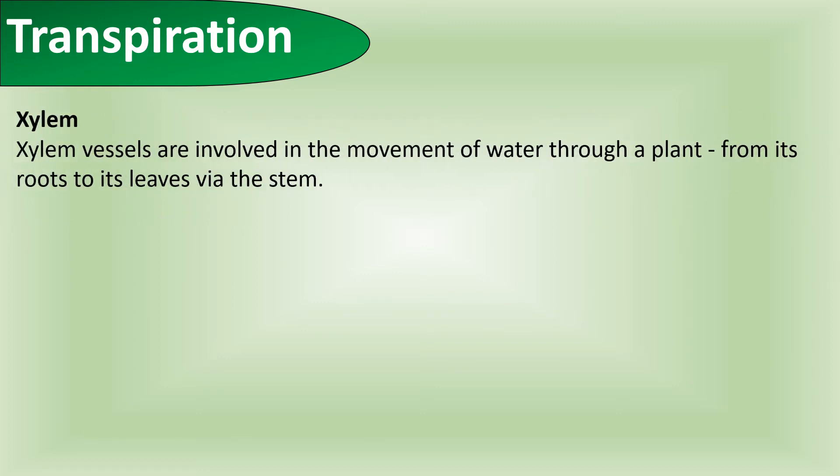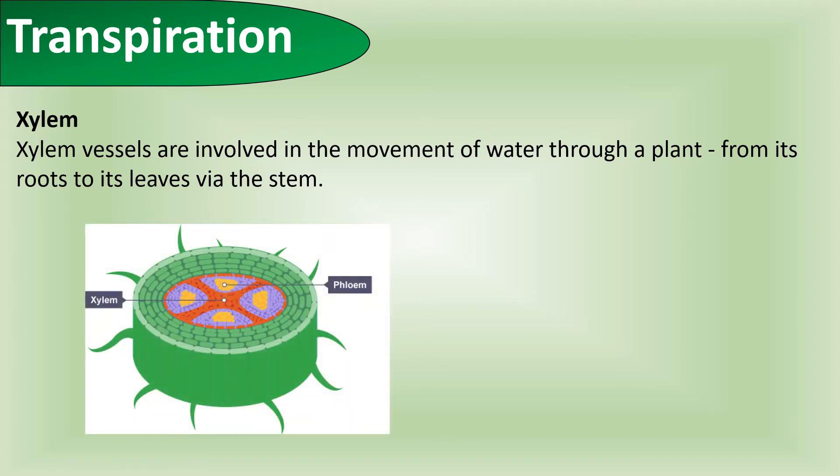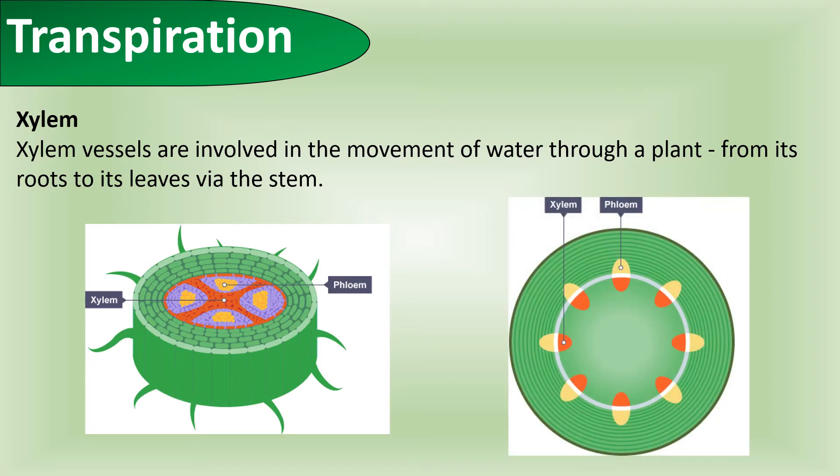Xylem vessels are involved in movement of water through plants from its roots to its leaves via the stem. In the roots, the xylem vessels form a cross shape in the middle with four clones around them. The root is adapted to absorb more water as it's covered in root hair cells which increase the surface area. As we move up through the stem, we find the typical arrangement where the phloem cells are on the outside and the xylem cells are on the inside. Between them is a strip called the Casparian strip that separates them.